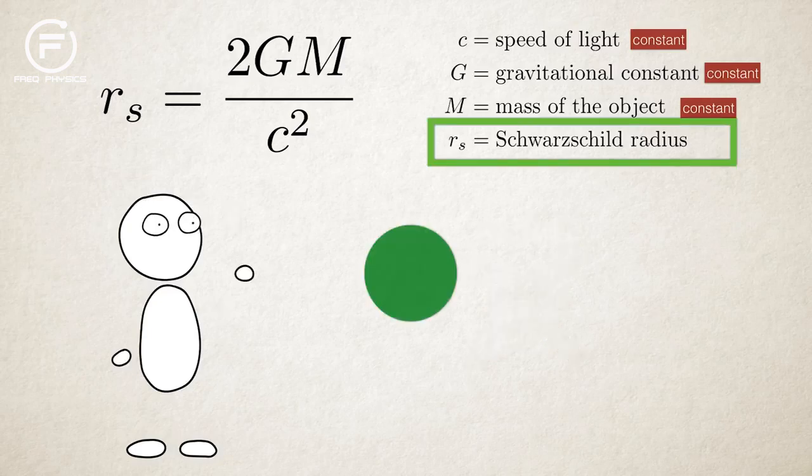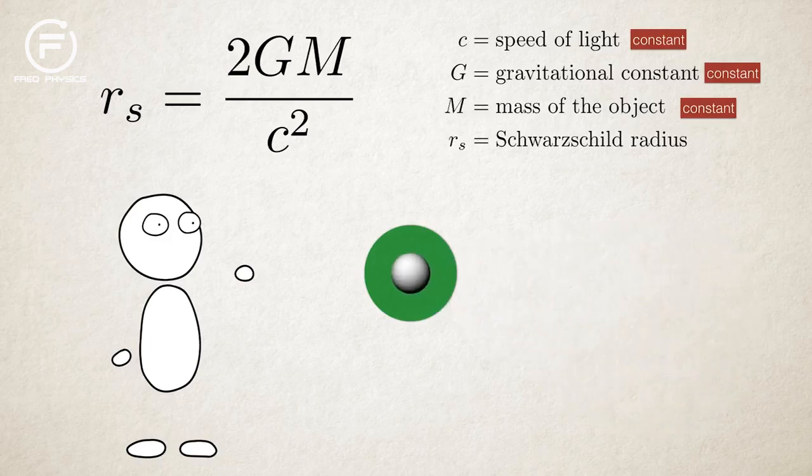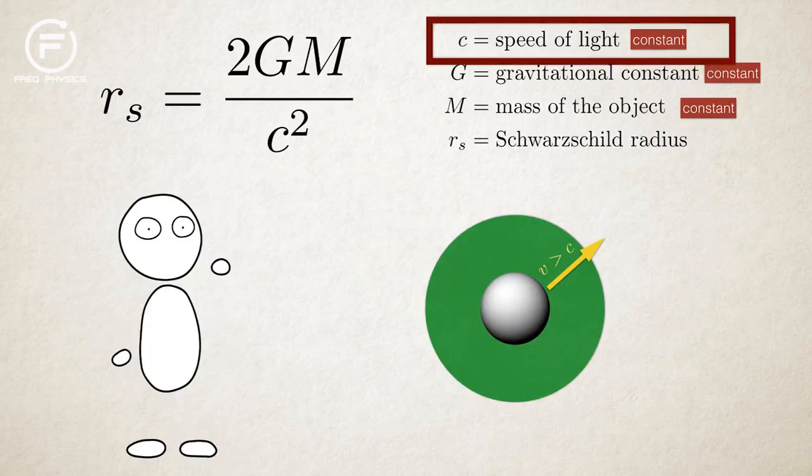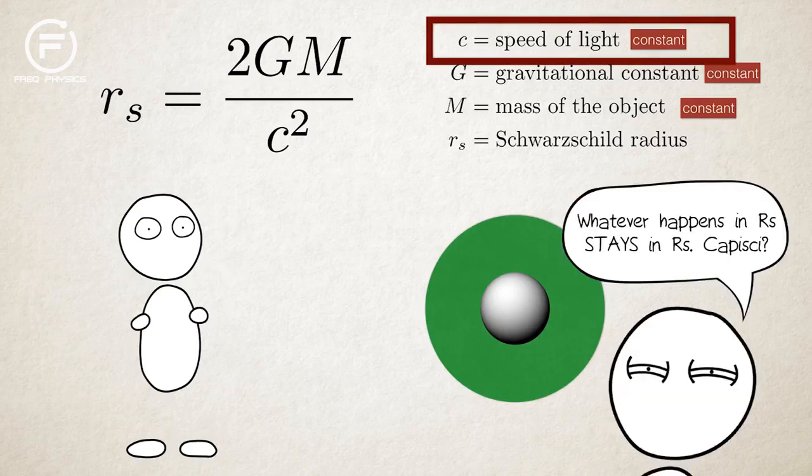It is the radius of a sphere such that, if all the mass of an object were to be compressed within that sphere, the escape velocity from the surface of the sphere would equal the speed of light. This means that in order to escape the gravitational pull of the object, whatever tries to get away from it would have to move faster than the speed of light. But because the speed of light is constant, and nothing can ever go faster, nothing can escape, including light.